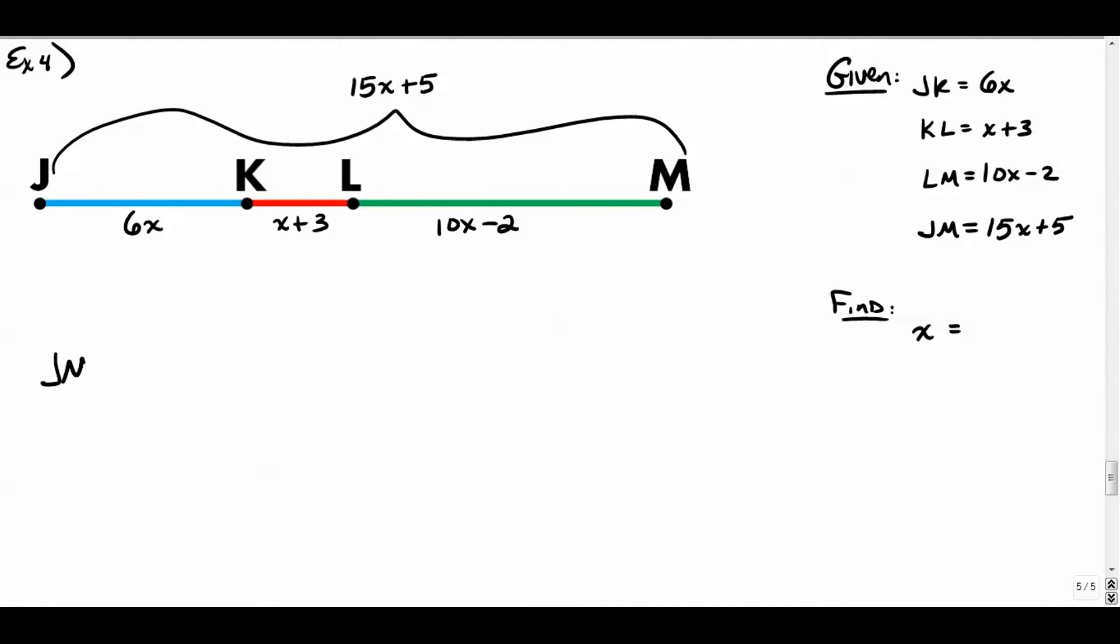So here we go. The whole thing, the length of segment JM is equal to the blue plus the red plus the green. So we have 15x plus 5 is equal to 6x plus x plus 3 plus 10x minus 2. The big thing, 15x plus 5 is basically just the sum of its components. All these smaller segments all add up to be 15x plus 5. And we just kind of solve this thing. It's a little bit of algebra here.